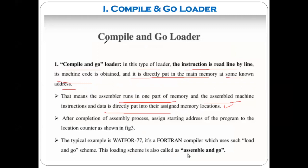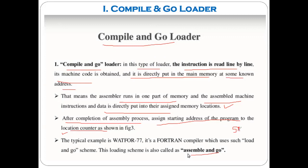After the assembly process, this compile-and-go or assemble-and-go loader assigns the starting address of the program to the location counter. Every loader must give the starting address to the CPU — stored in the memory address register, location counter, or program counter. The CPU refers to this register and starts execution from the starting address mentioned there. Both assembling and loading are performed by this single translator, which is the compile-and-go loader.